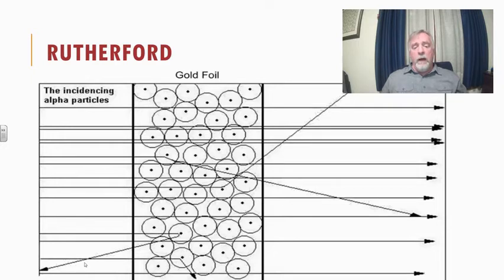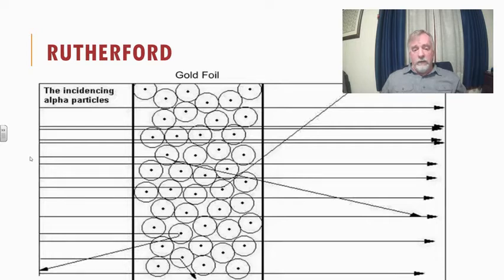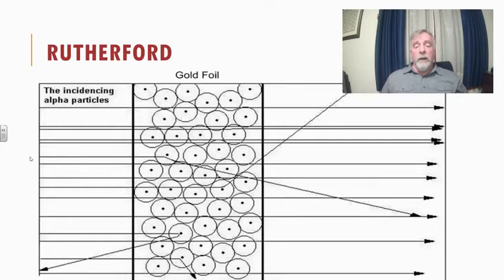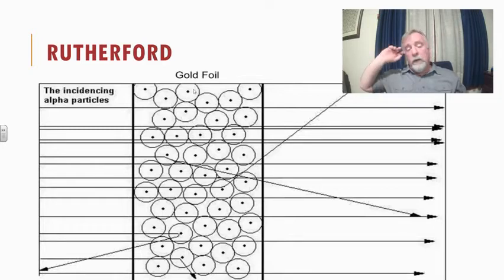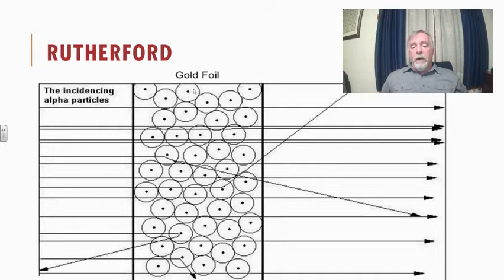That was very surprising. So what did Rutherford conclude? He came up with the idea that the atom must have a positively charged nucleus, because it was able to scatter the positively charged alpha particles, and that nucleus must be very dense and very massive. He compared it to rolling a bowling ball through bowling pins — with any speed it goes pretty much straight through.